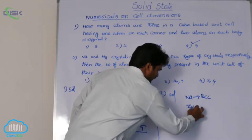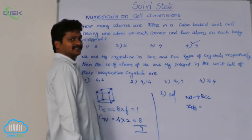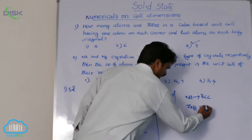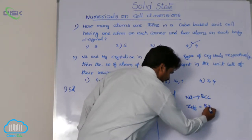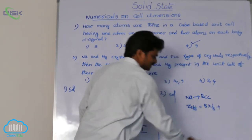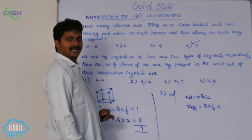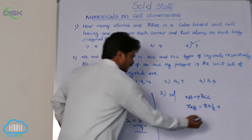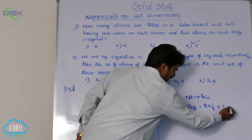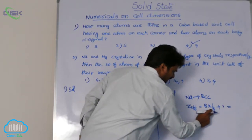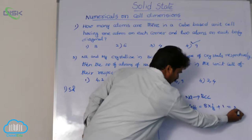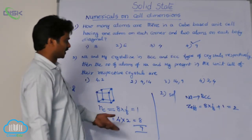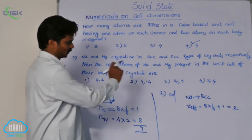Number of effective atoms in BCC: in BCC, atoms are at 8 corners, so 8 × 1/8, plus 1 atom is present at the center of the cube — that is a complete atom. Its value is 8 × 1/8 = 1, plus 1 = 2. So number of effective atoms of sodium in its BCC lattice are 2.